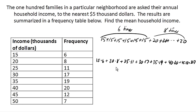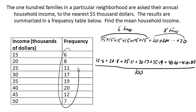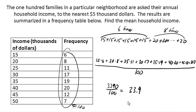...we're going to divide by the 100 families in the neighborhood. If they hadn't told us this number, we could always find it by adding up all of our frequencies, which would have added up to 100 families. Calculating the numerator gives us 3,390. Divide that by 100 and we get 33.9 — so the mean income of our sample is 33.9 thousand dollars, or $33,900, because this was measured in thousands of dollars.